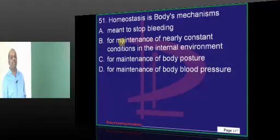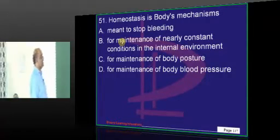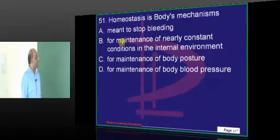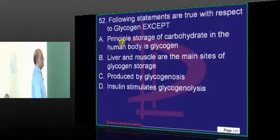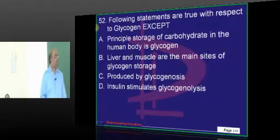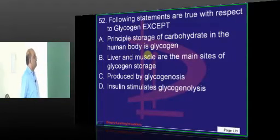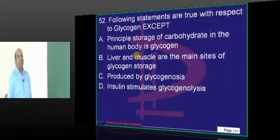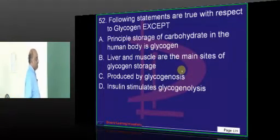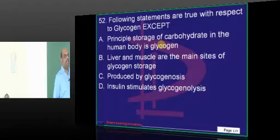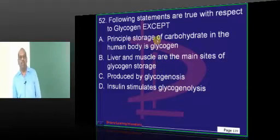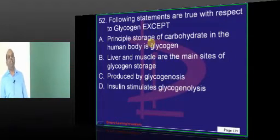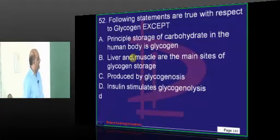Homeostasis is the maintenance of a nearly constant condition of the internal environment — this is a fundamental first-year MBBS question. Coming to glycogen: what is the effect of insulin? The job of insulin is to decrease blood glucose, which can only happen if it promotes storage rather than breakdown of glycogen. Therefore the answer for question number 52 is option D.